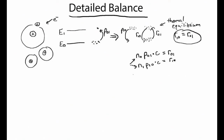So in the two-state system, this is straightforward to solve. You can match your rates, figure out your transition probabilities, and solve for the ratio of atoms in the excited and unexcited states. But things get much more complicated when you start adding more states.